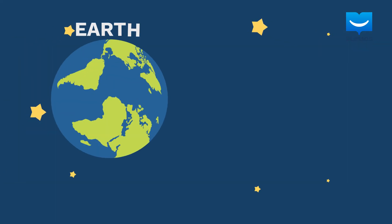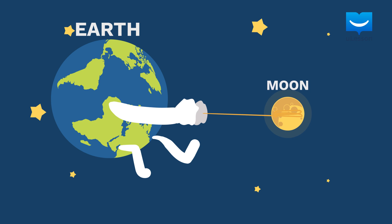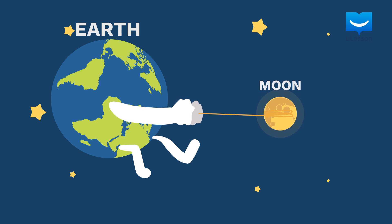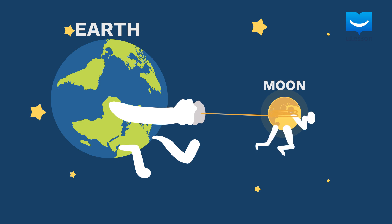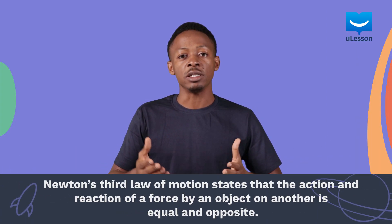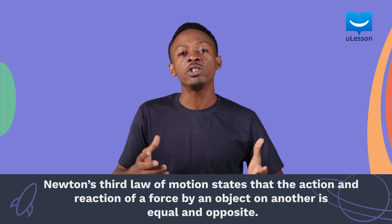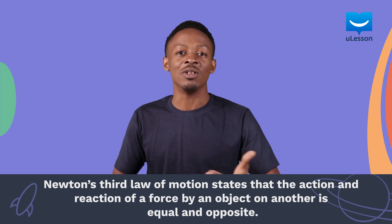You may also know that the Earth's satellite, the Moon, is constantly being pulled towards the Earth with the Earth's gravitational force. This is an action. So from Newton's third law, the Moon also reacts by pulling the Earth with an equal but opposite force. This law can also be written as: the action and reaction of a force by an object on another is equal and opposite.